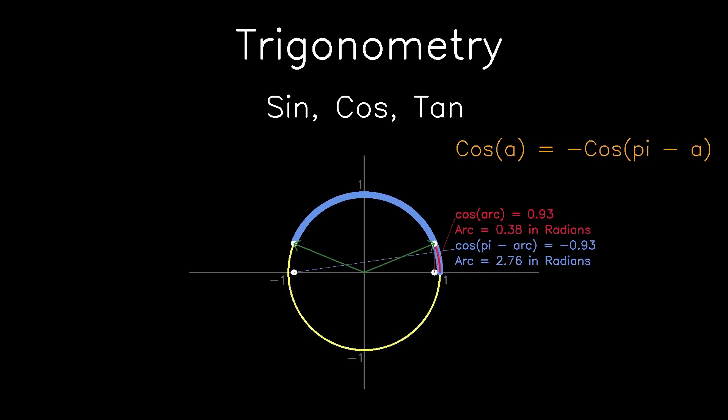If we reflect about the y-axis, we will get the negative value. Therefore, cos A equals the negative of cos pi minus A.